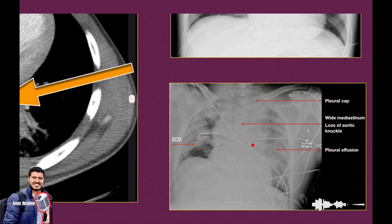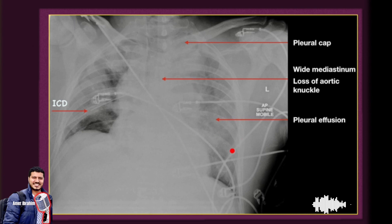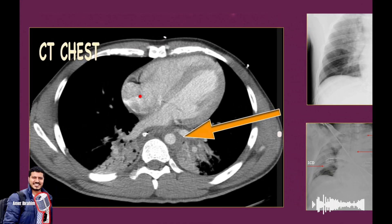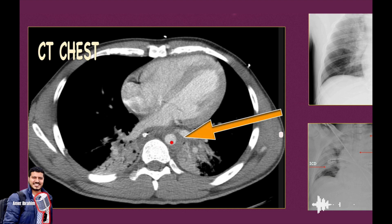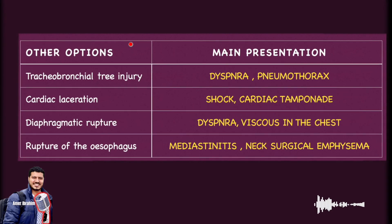By radiology, findings of traumatic aortic disruption include: widened mediastinum, pleural cap, loss of aortic knuckle, and pleural effusion — seen with severe chest trauma. We can also use CT chest, which shows peri-aortic hematoma.